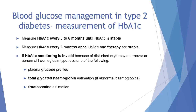In terms of blood glucose management in type 2 diabetes, we will normally measure HbA1c levels at three to six monthly intervals until the HbA1c is stable, and then at six monthly intervals once the HbA1c level and the therapy are stable. If HbA1c monitoring is invalid because of disturbed erythrocyte turnover or abnormal haemoglobin type, we will need to estimate blood glucose control using plasma glucose profiles, total glycated haemoglobin estimation if there is abnormal haemoglobin, or fructosamine estimation.